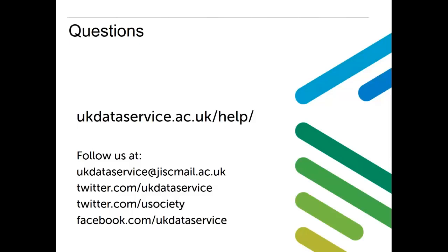It may take a little bit longer if we have to investigate a matter, but we will keep you informed. You can also follow us using our JISC Mail service — we contact this mailing list once a week, outlining new datasets and updated collections in the archive. If you're waiting to see when the next wave of Understanding Society is available, signing up will get you a weekly email with all datasets added that week. You can also use Twitter at UK Data Service, contact the Understanding Society team at USociety, and we have a Facebook page as well.